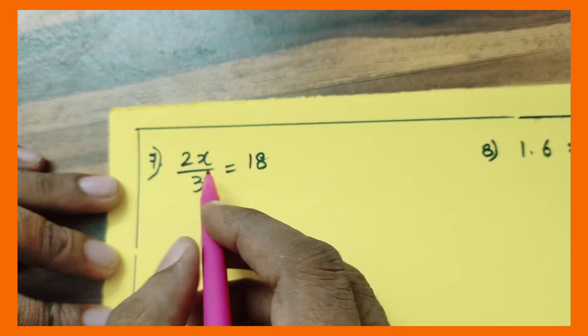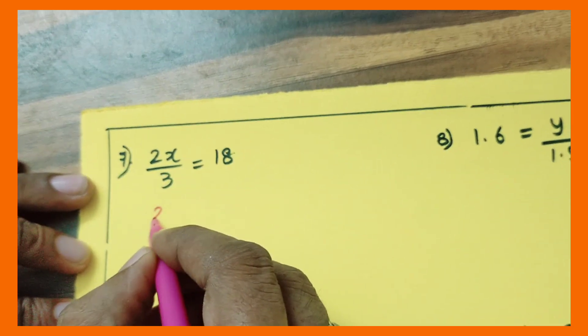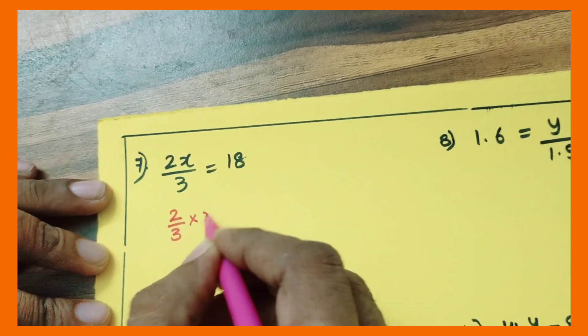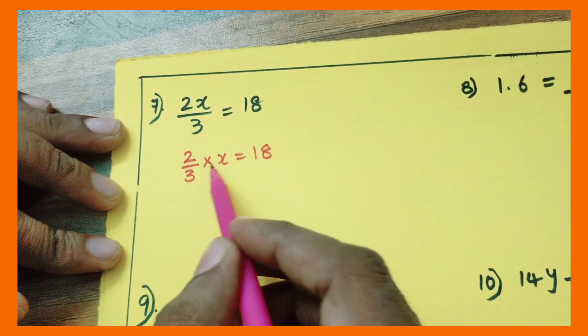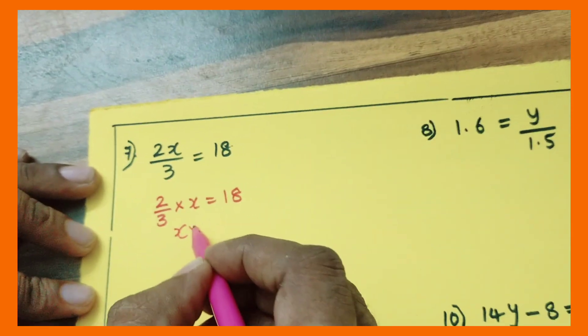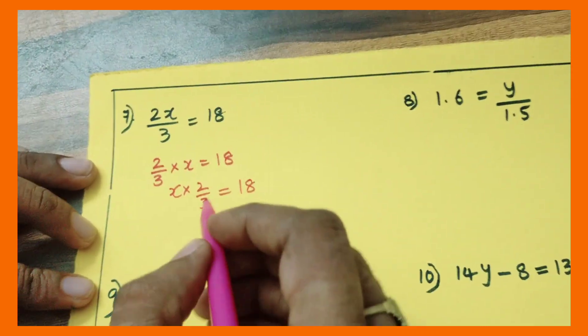2 by 3 into x - we can say that 2 by 3 into x or 2x by 3. Now you see, 2 by 3 into x, we can write this as - already we learned that if there is a product, this can be written as x into 2 by 3.